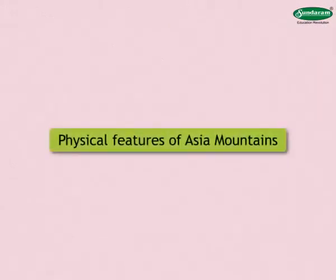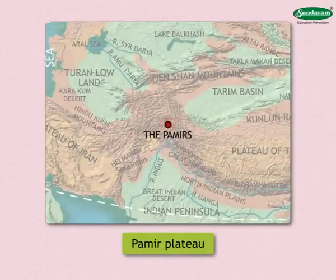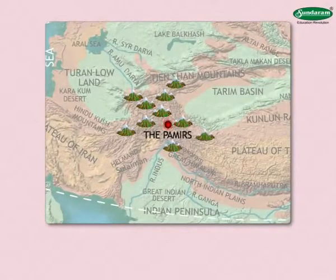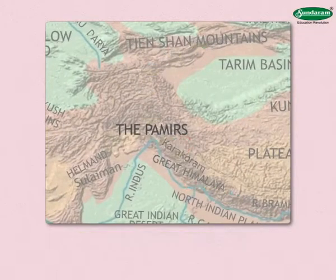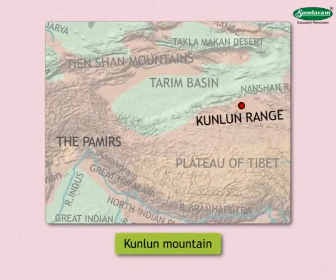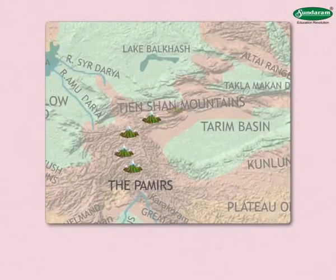Physical Features of Asia — Mountains: Many mountain ranges, starting from the Pamir Plateau in Central Asia, spread in different directions. The Himalaya and Karakoram range spread towards the southeast from the Pamirs. The Kunlun mountain range spreads to the east of Pamir. The Tien Shan mountain range is to the northeast of Pamir and spreads up to the far east of Asia.